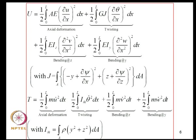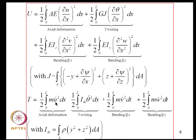In the last lecture we looked at the structure of the strain energy and kinetic energy for a 3D beam element. The strain energy consists of energy due to axial deformation, due to twisting, due to in-plane bending, and out-of-plane bending, where J is the torsional constant given in terms of psi which is a warping function. The kinetic energy has contributions due to axial deformation, twisting, and the 2 bending actions, where IM-bar is given by a corresponding integral.